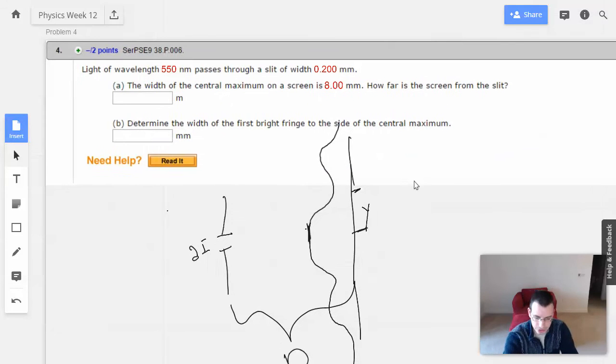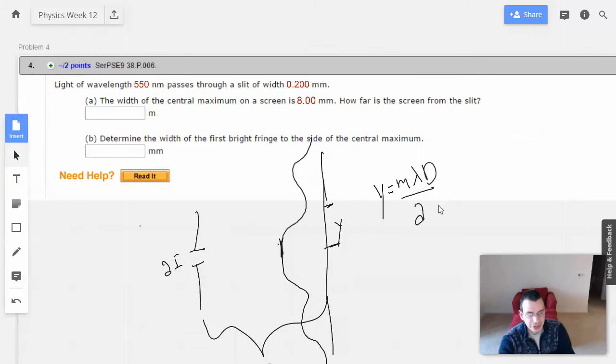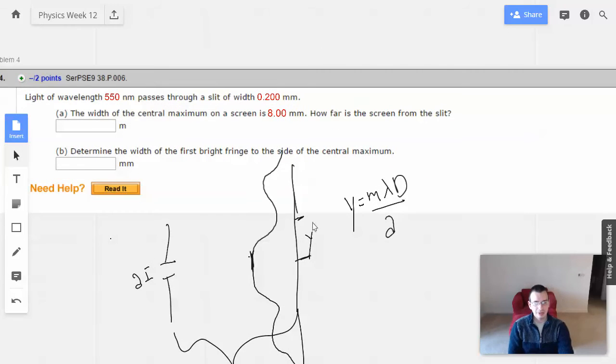And the formula we're going to use is going to be Y equals M lambda big D over A. So what this is going to tell us is the distance to a minimum, because that's how the single slit formula works. But we want to find the width of the central maximum, this guy right here on the screen. So what we're going to do is find the distance to the first minimum and then double it. Because that way we'll find the top, we'll find the bottom, and we take the top and bottom and put it together, we'll have the whole thing.